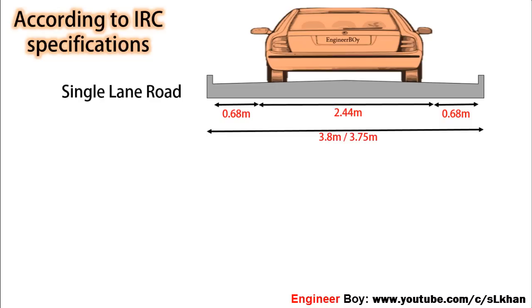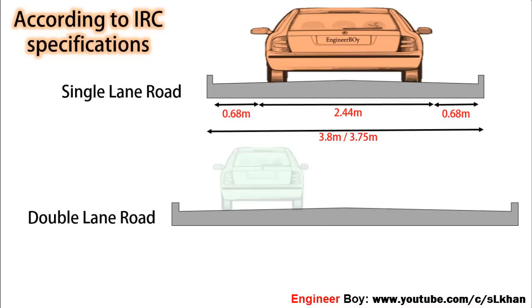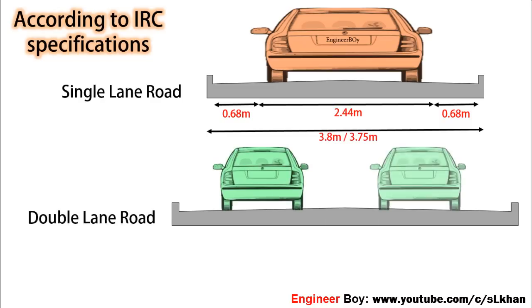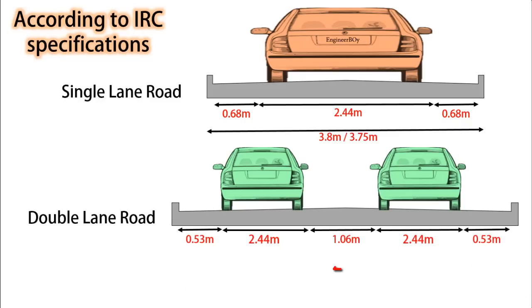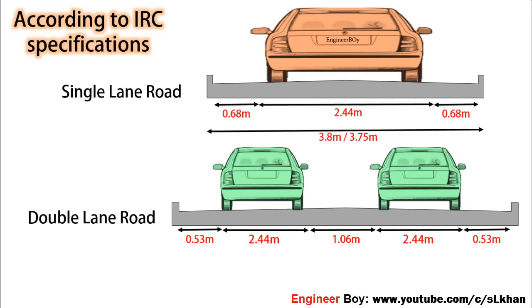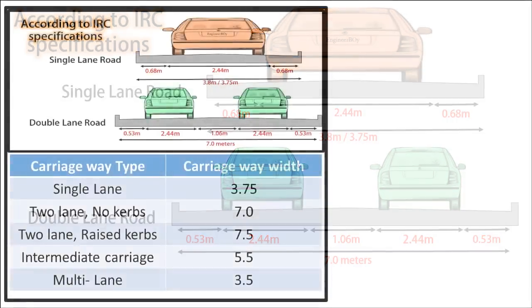For a single lane road, the minimum road breadth should be 3.75 meters. However, this can be different for a two-lane road. In the case of a two-lane road, the side clearance required is about 0.53 meters on both sides and 1.06 meters in the center. Therefore, a two-lane road requires a minimum of 3.5 meters per lane, which gives 7 meters for two lanes.